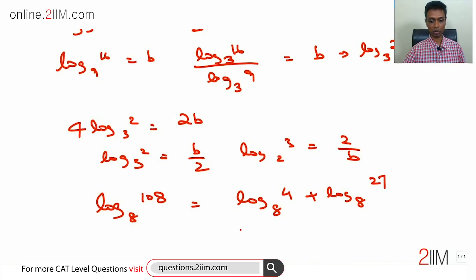Log 4 to the base 8 is log 4 by log 8, which is 2 by 3. I choose the base as 2. Plus log of 3 cubed to the base 2 cubed. 3 cubed to the base 2 cubed, log will be nothing but log 3 to the base 2.